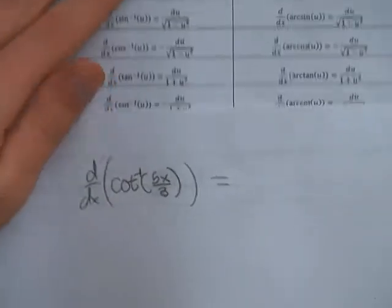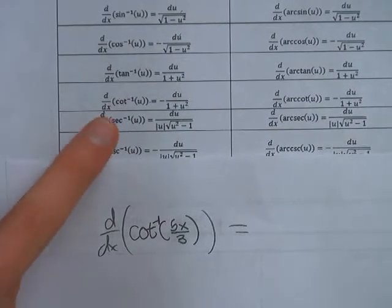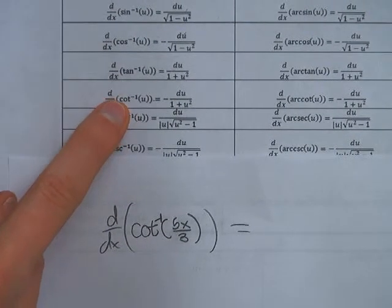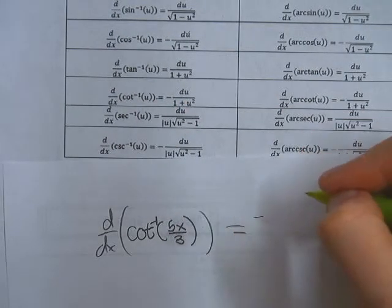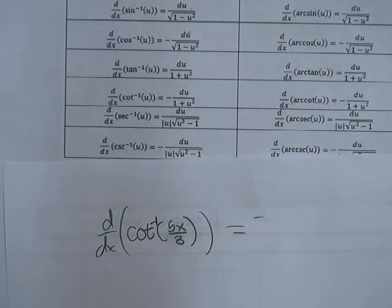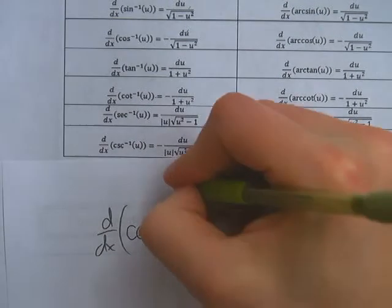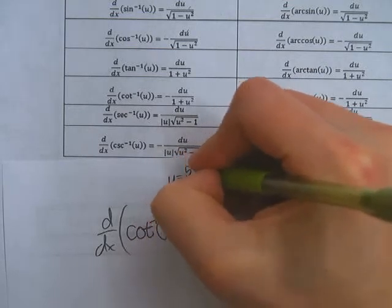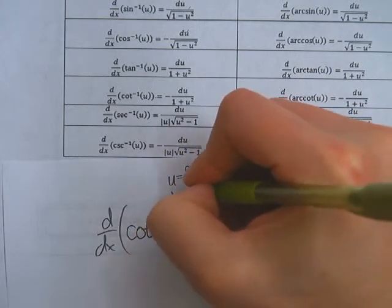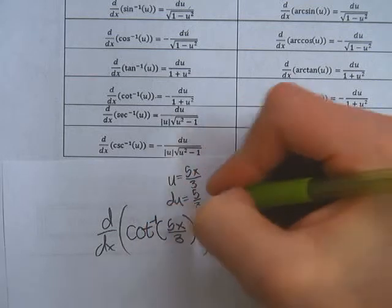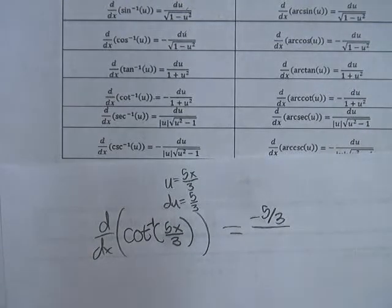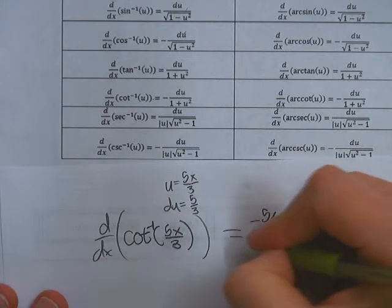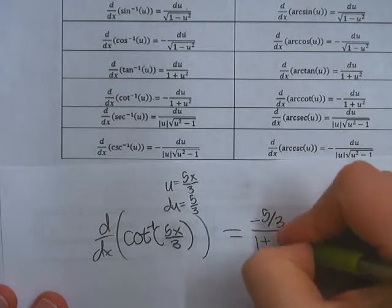So the derivative of inverse cotangent, I go to my table and it's that guy. Okay, so I just do negative, okay, du. Du is the derivative of the inside, so u is 5x over 3, and du would be 5 over 3. So we're just, it's just negative 5 thirds on top, over, and cotangent I just need to do 1 plus u squared, so 1 plus 5x over 3 squared.